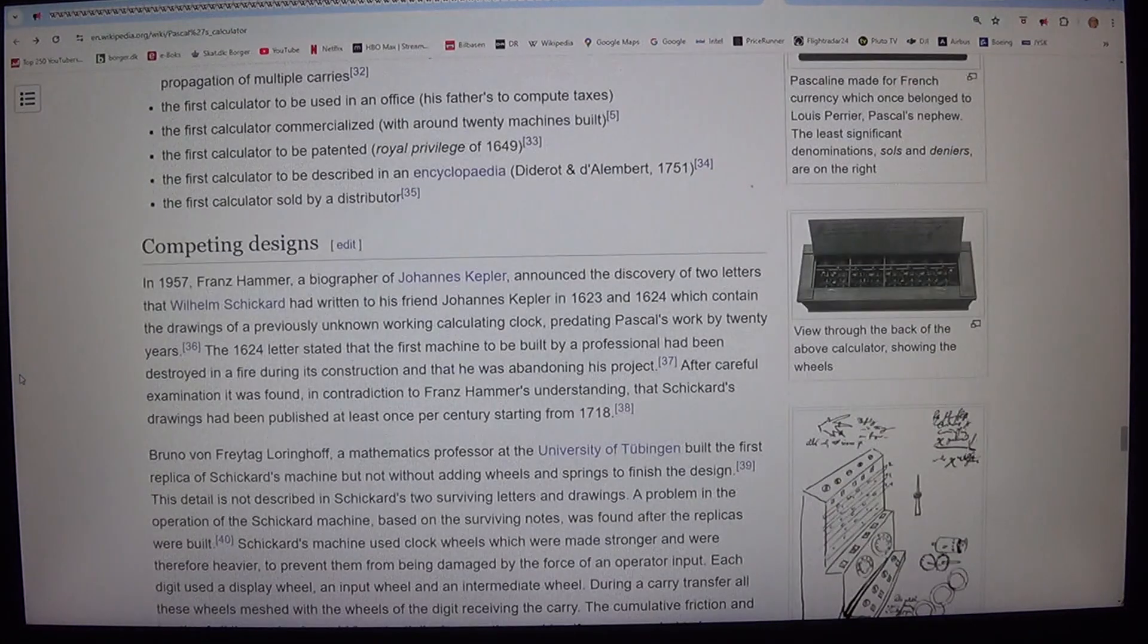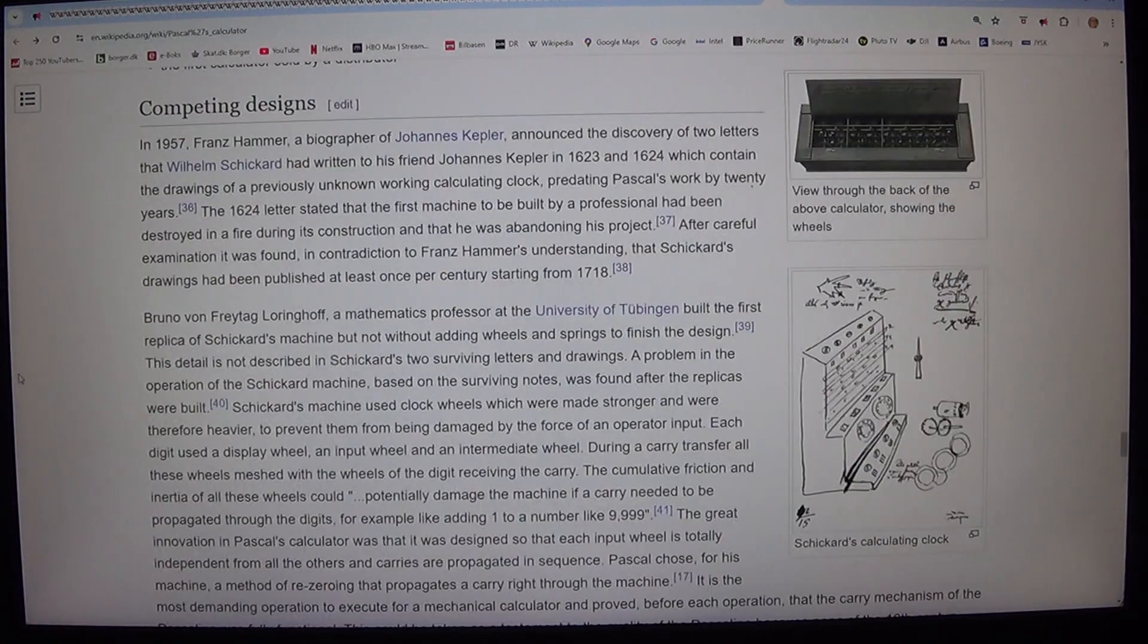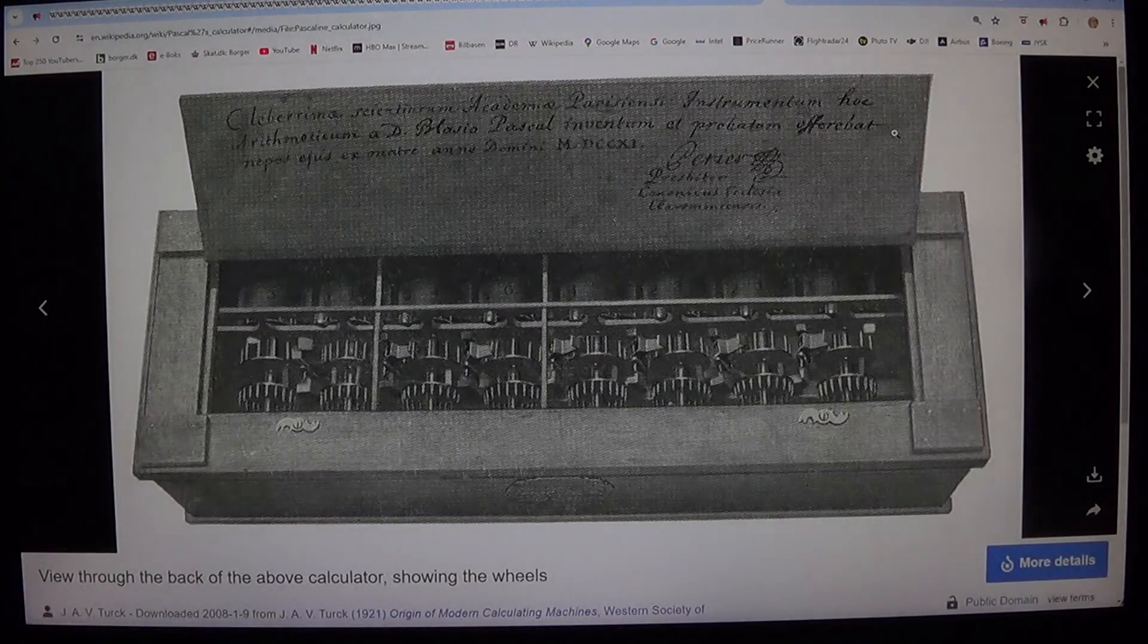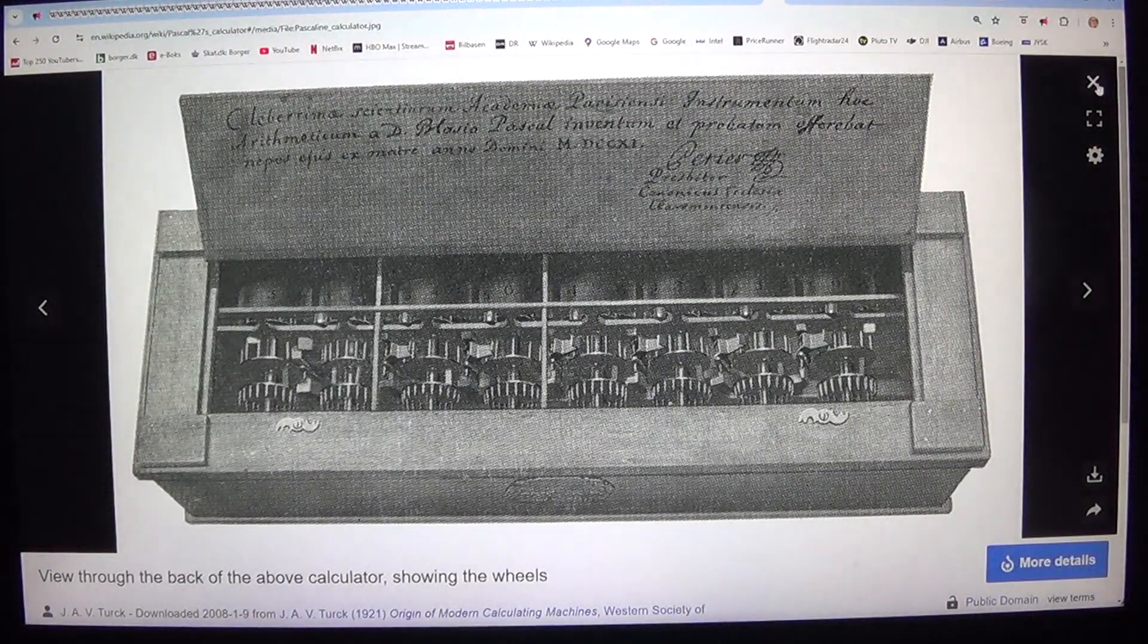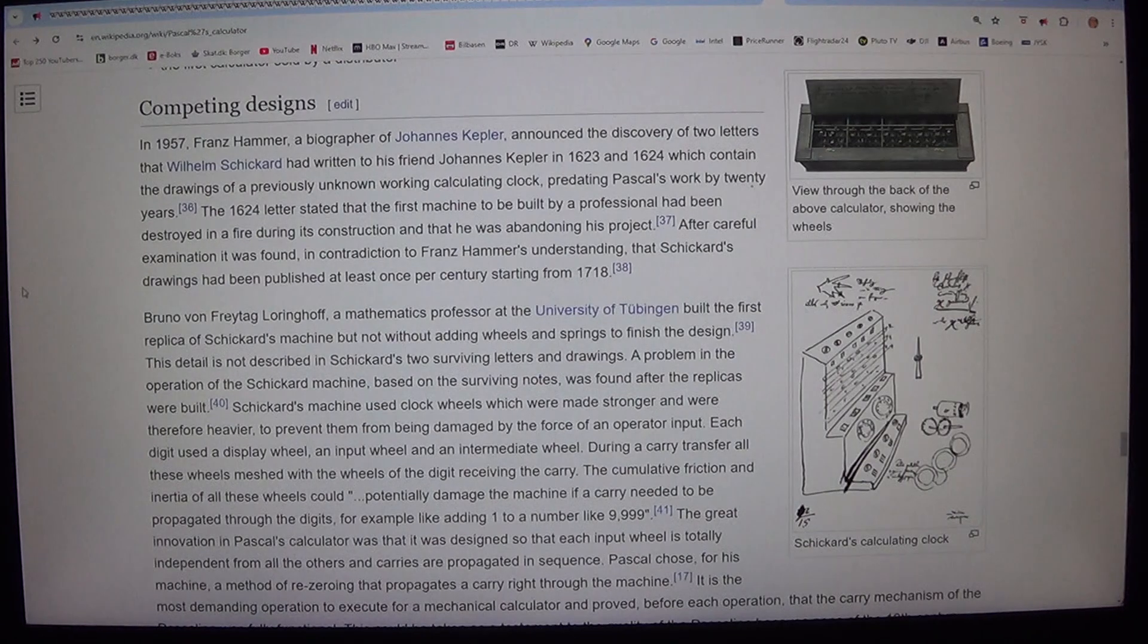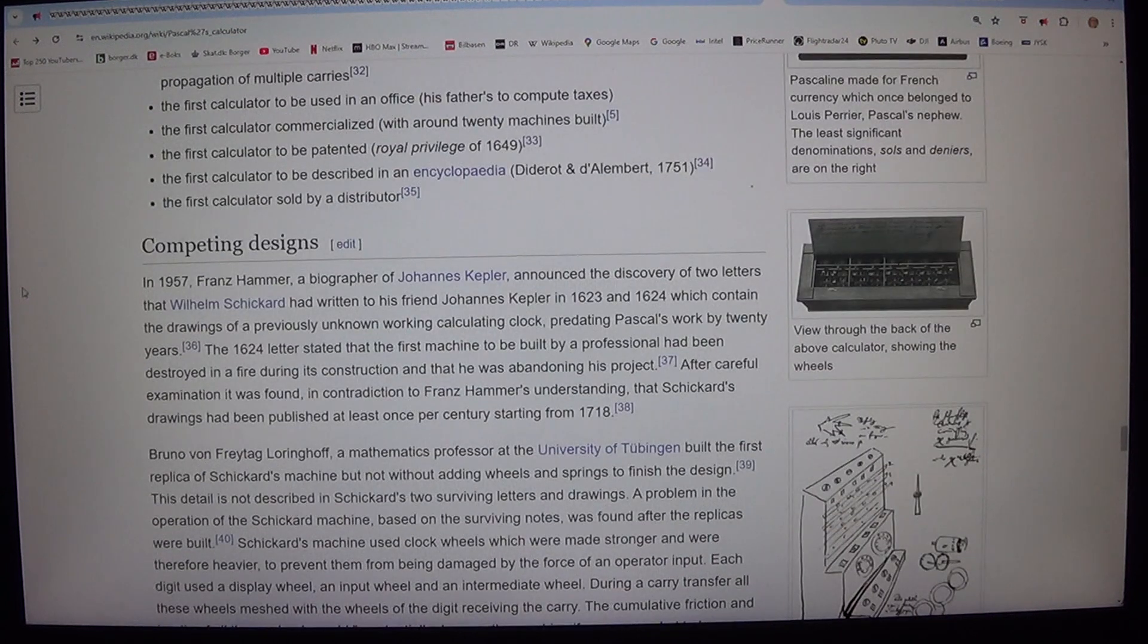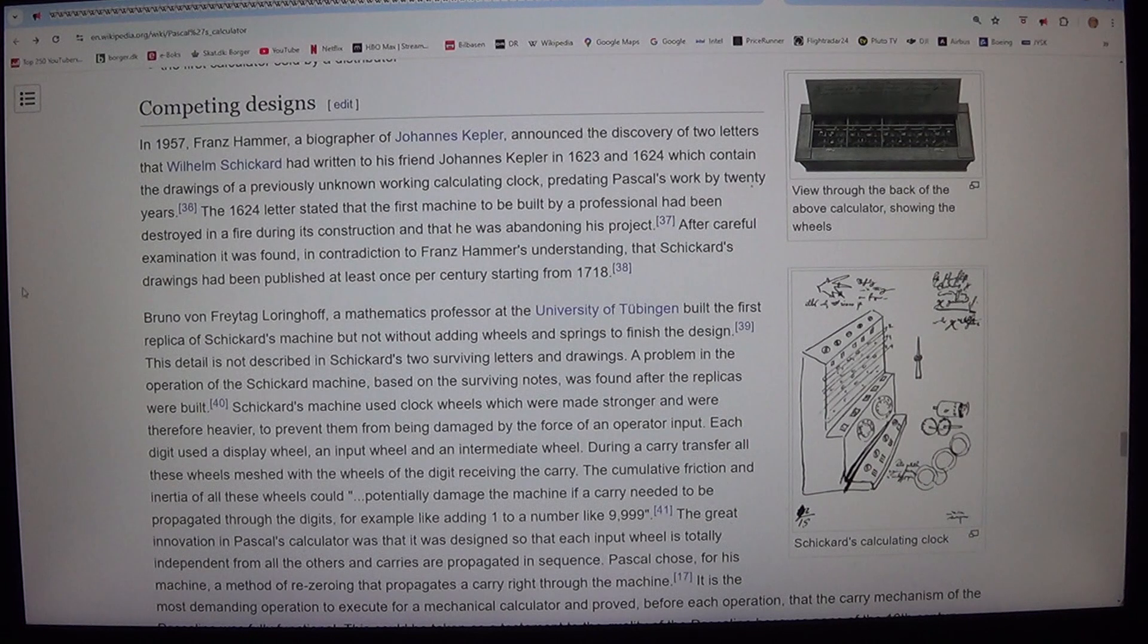4. The first calculator commercialized, with around 20 machines built. 5. The first calculator to be patented, royal privilege of 1649. 6. The first calculator to be described in an encyclopedia, Diderot and d'Alembert, 1751. 7. The first calculator sold by a distributor.